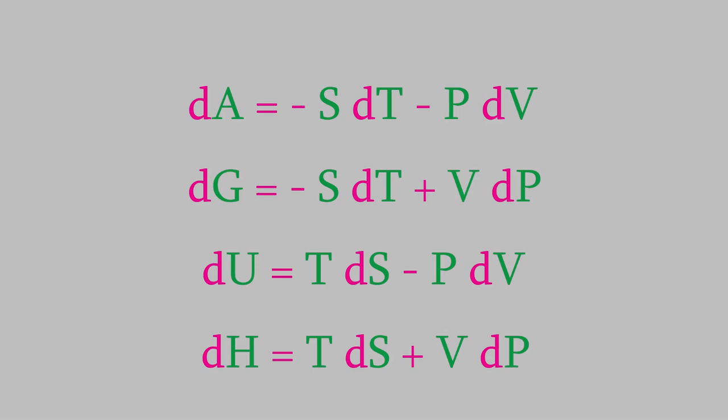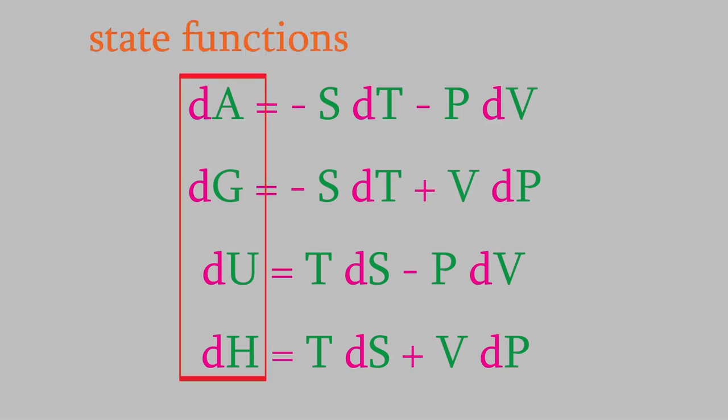All four of the properties on the left sides of these equations are state functions. That means that the change in A, G, U, or H, when we go from an initial state to a final state, will be the same no matter what process was used to get from the initial state to the final one.